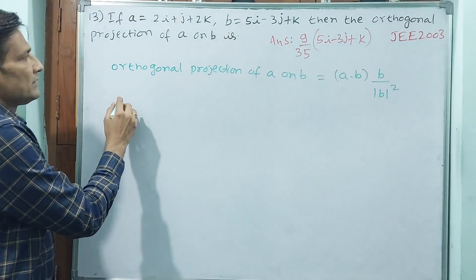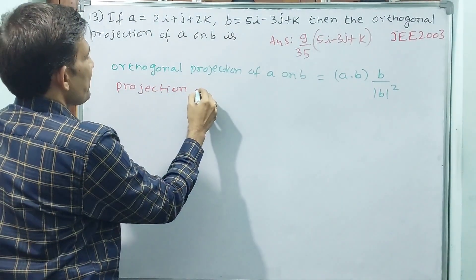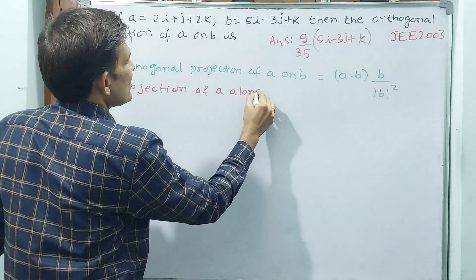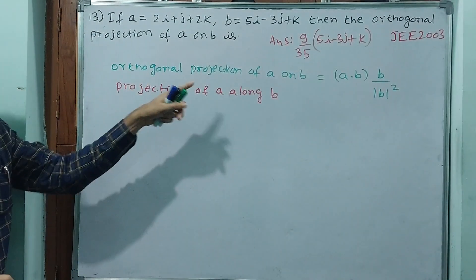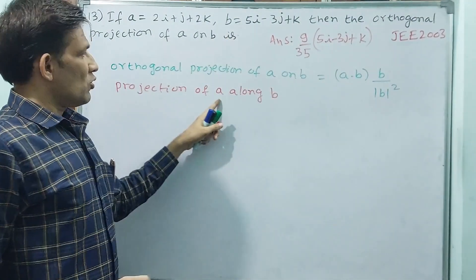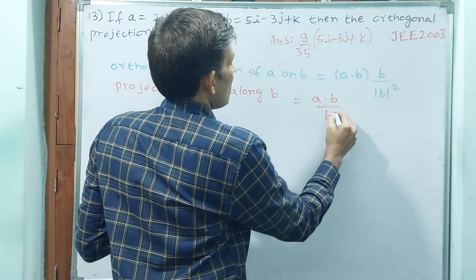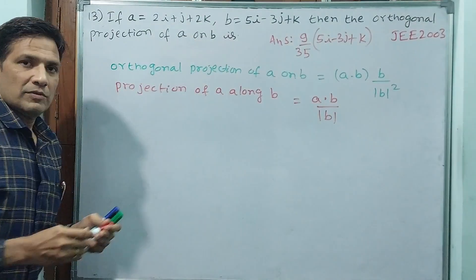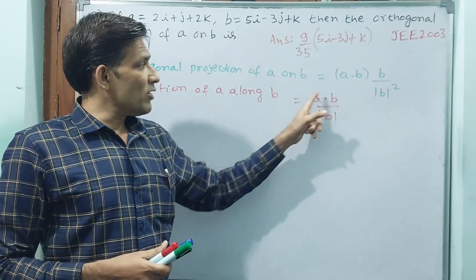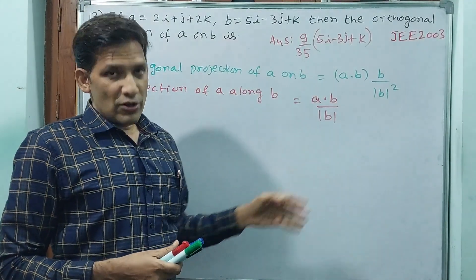Now come back, another projection I am telling. See, what is the difference? Observe carefully. Projection of A along B. Compare both. Orthogonal projection of A on B, projection of A along B. This formula you see, A dot B by modulus of B. This is completely scalar. Why? A dot B is a scalar, modulus is also a scalar. That means the projection of A along B means scalar we are going to get.